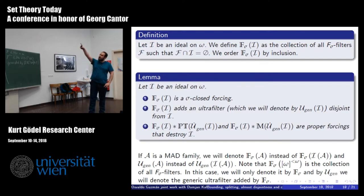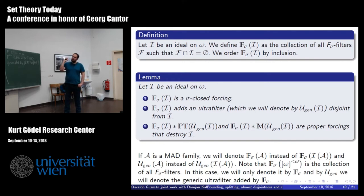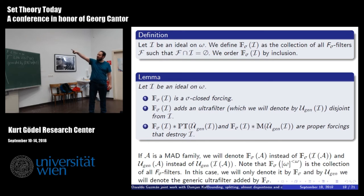Okay. So now, if we have an ideal I, we define F-sigma of I as the collection of all F-sigma filters that are disjoint from it. And we order it by inclusion. So it's easy to prove that this is a sigma-closed forcing. It adds an ultrafilter that is disjoint with I, or it contains the dual. And so, in this case, if I will first force with this guy, and then use either the Mathias or PT, those destroy I. Okay. If I is a MAD family, we just say F-sigma of A instead of F-sigma of I of A, where I of A is the ideal generated by A. And instead of putting the finite sets, we just call it F-sigma.